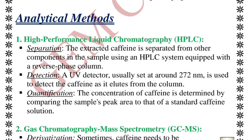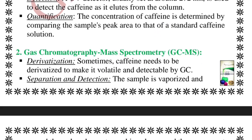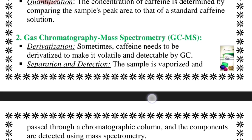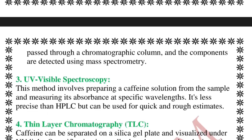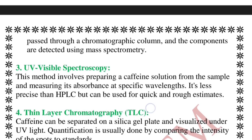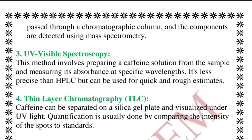The first analytical technique is HPLC — high performance liquid chromatography. Next we have the gas chromatographic technique, specifically GC-MS, which incorporates both gas chromatography and mass spectrometry. In that case we need to vaporize the sample, pass it through the chromatographic column, and the components are detected using mass spectrometry.